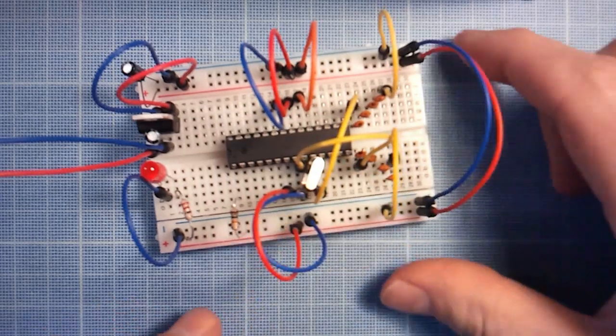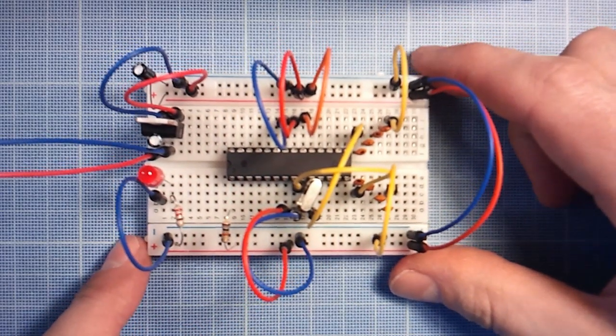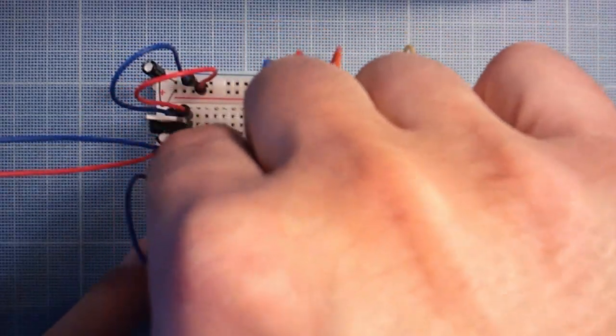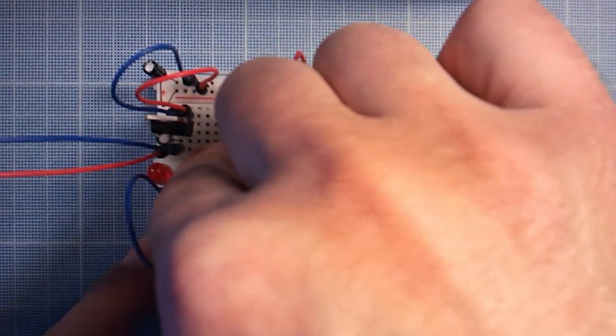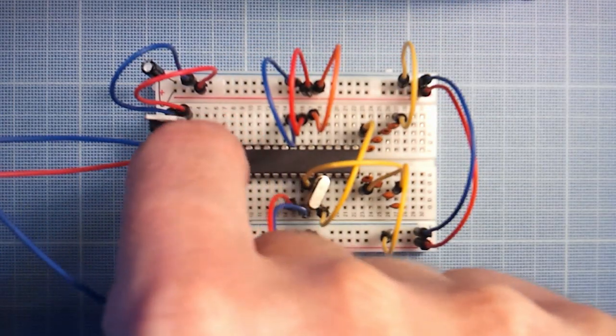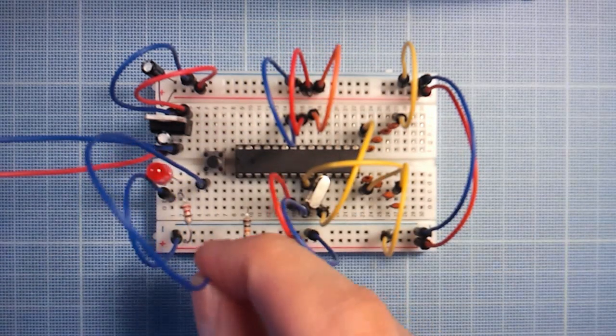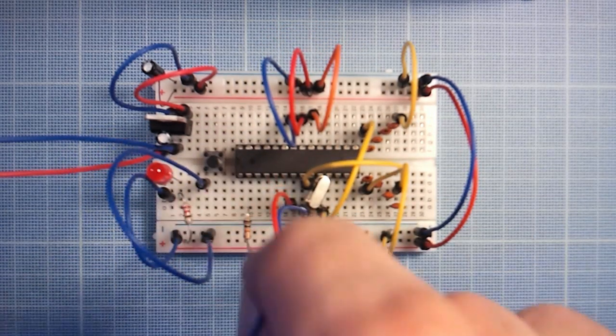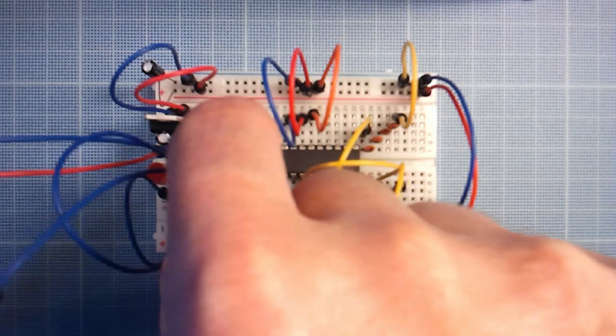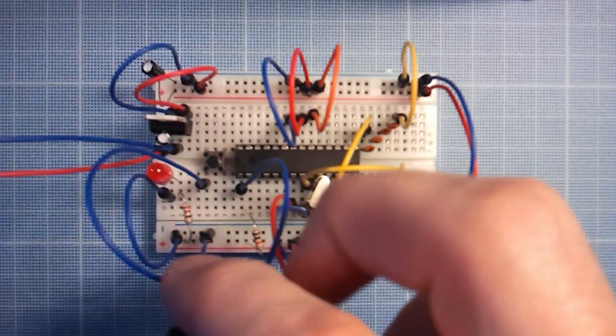We need a reset button so connect the momentary switch next to your IC. Connect the jumper wire from the switch to the ground. Connect another jumper wire from the second terminal of your switch to the first pin of your IC.